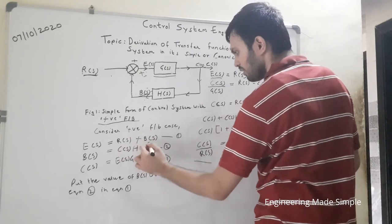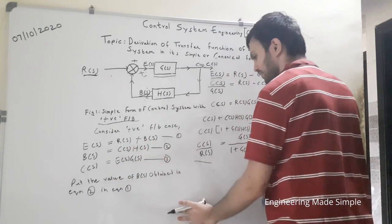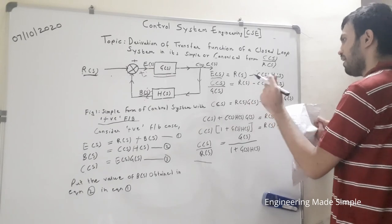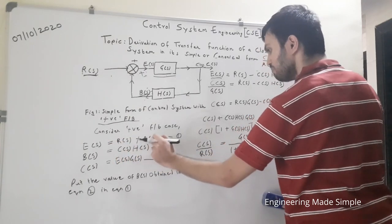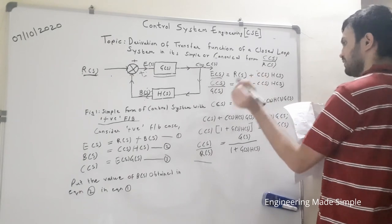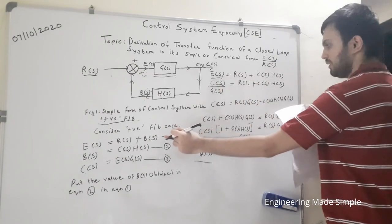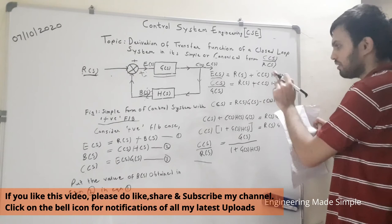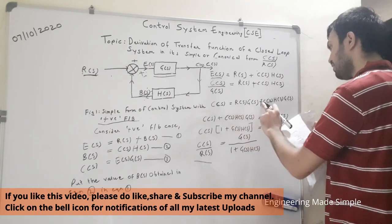For a positive feedback closed loop system, the polarity of the summing junction changes to positive. Because of that, the error signal becomes E(s) = R(s) + B(s). The value of B(s) remains the same: B(s) = C(s) · H(s), and there is no change in the third equation.